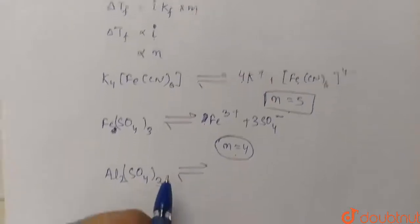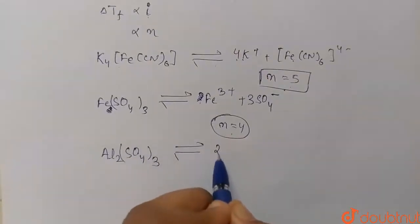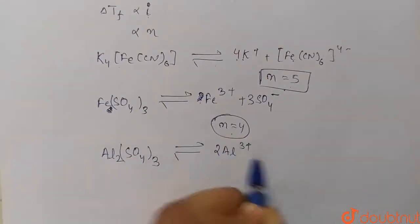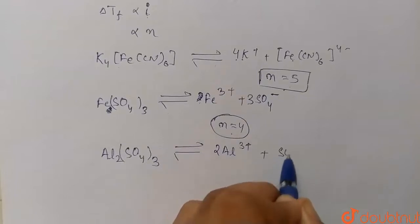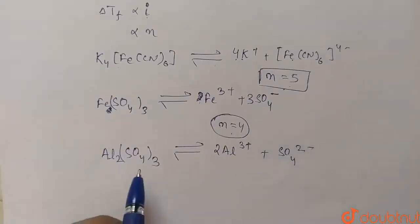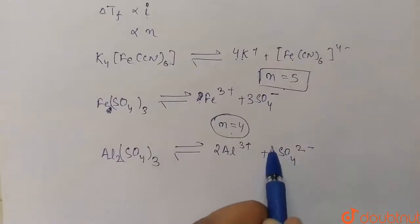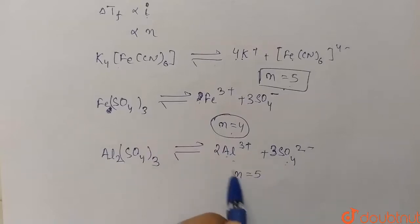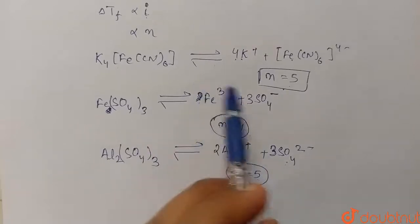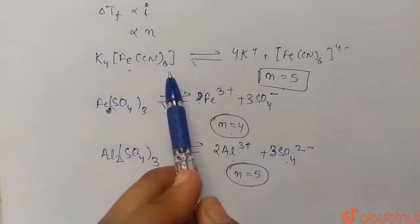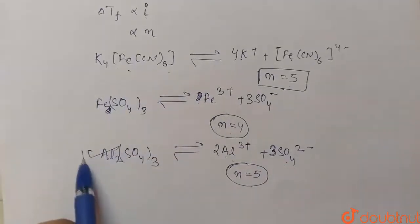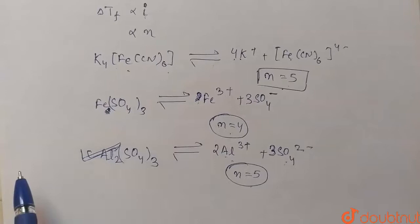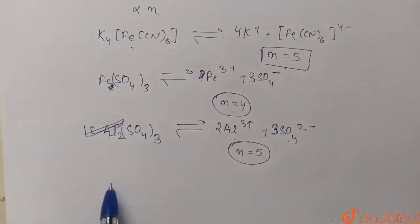Option B: Al₂(SO₄)₃ dissociates into 2Al³⁺ and 3SO₄²⁻, giving us 5 ions total. So n equals 5, which matches K₄[Fe(CN)₆]. This is our answer.